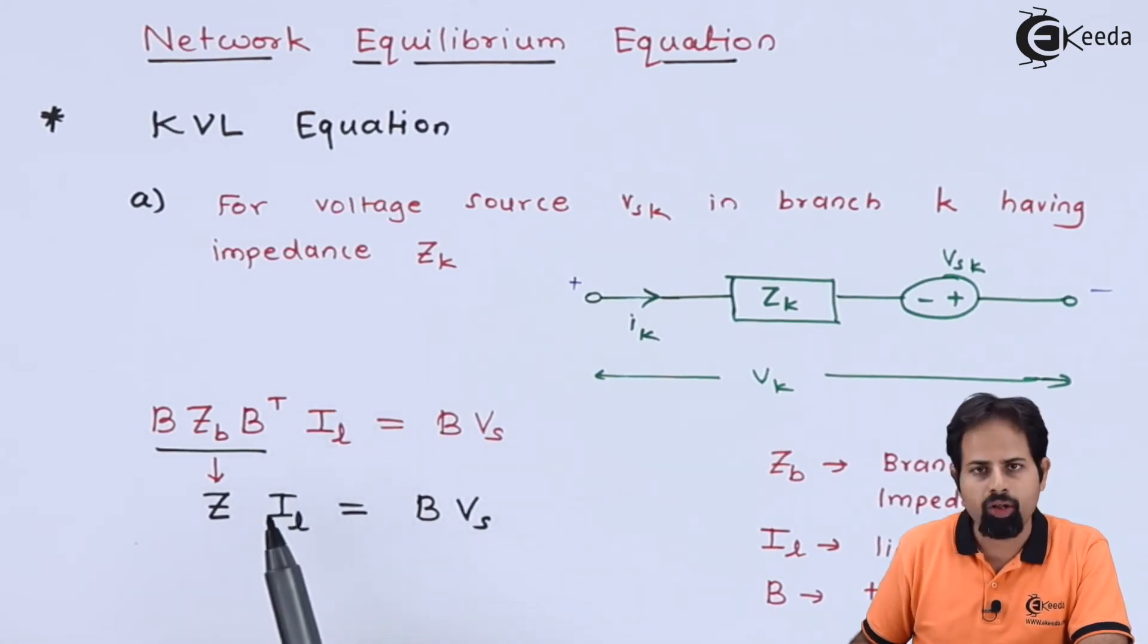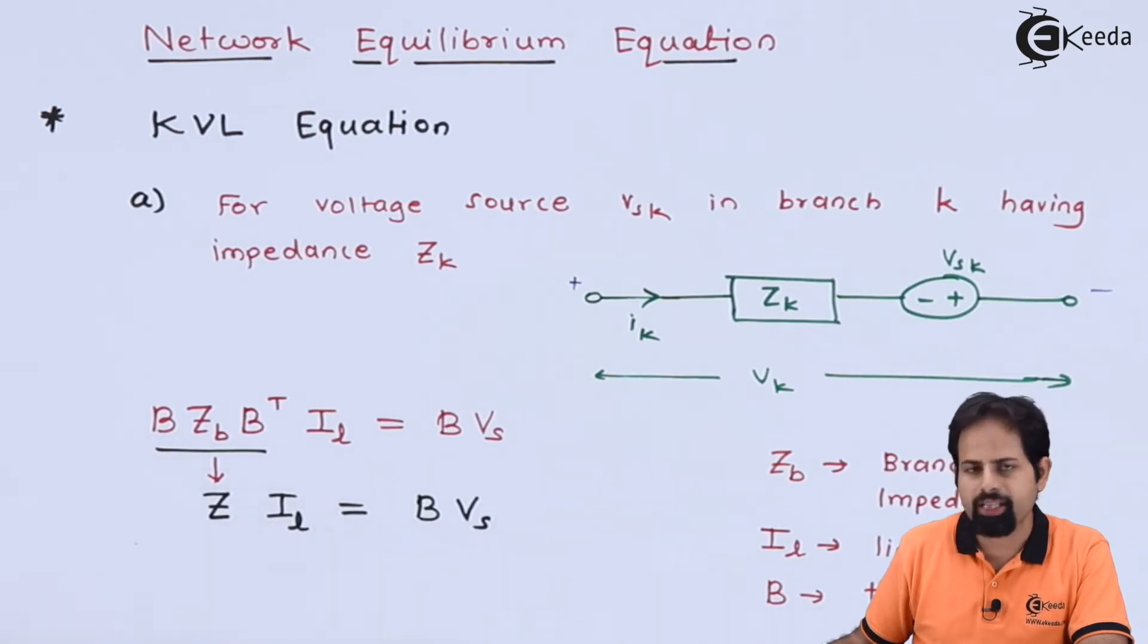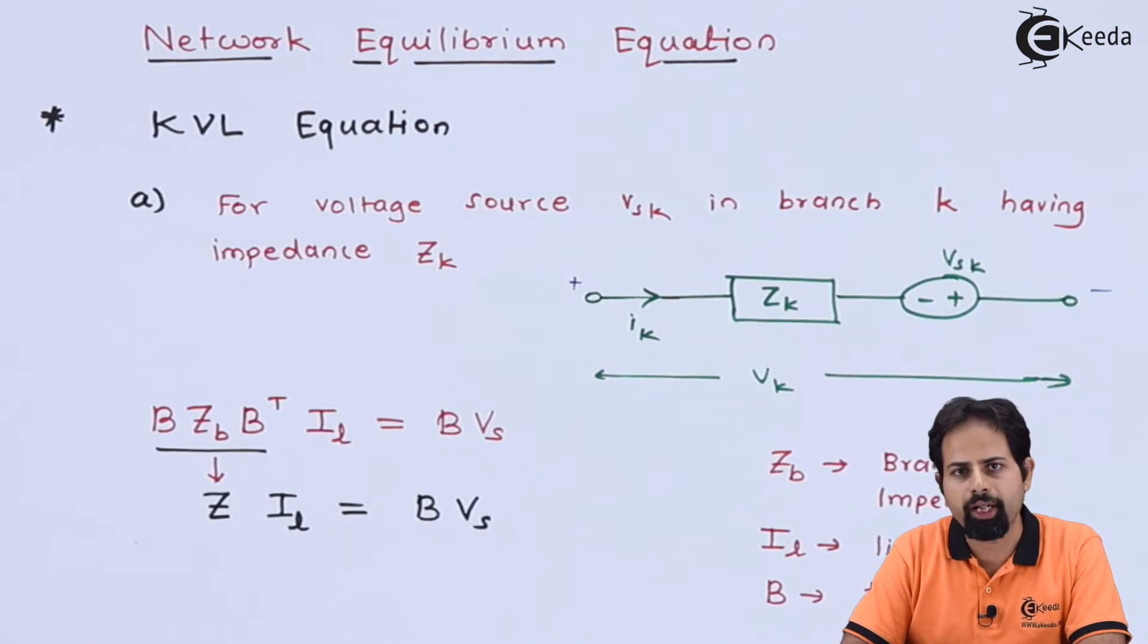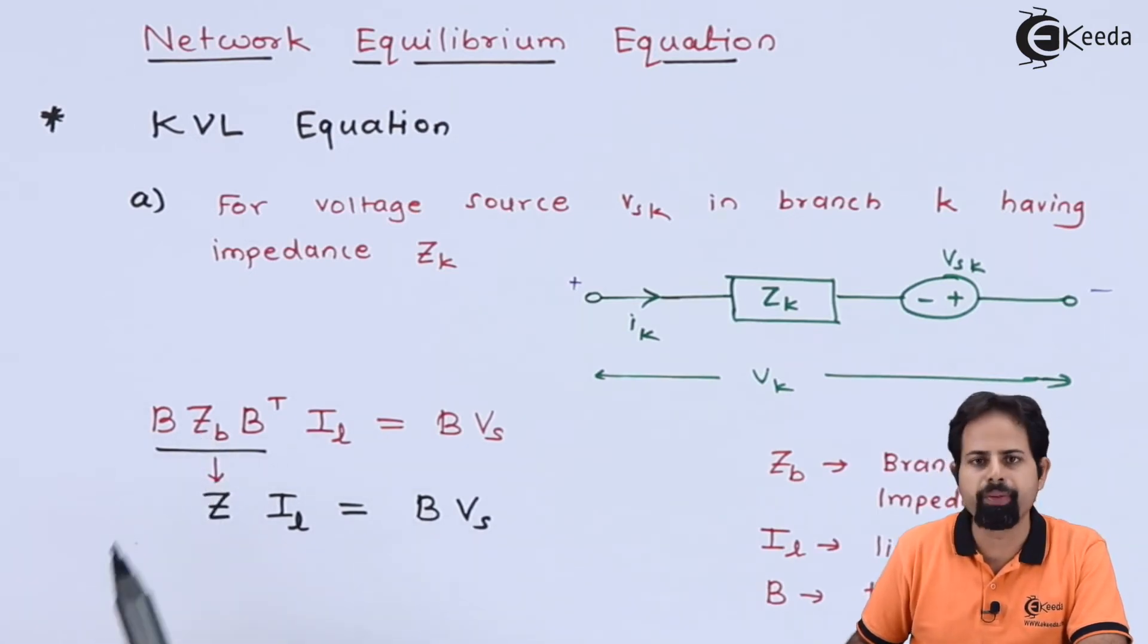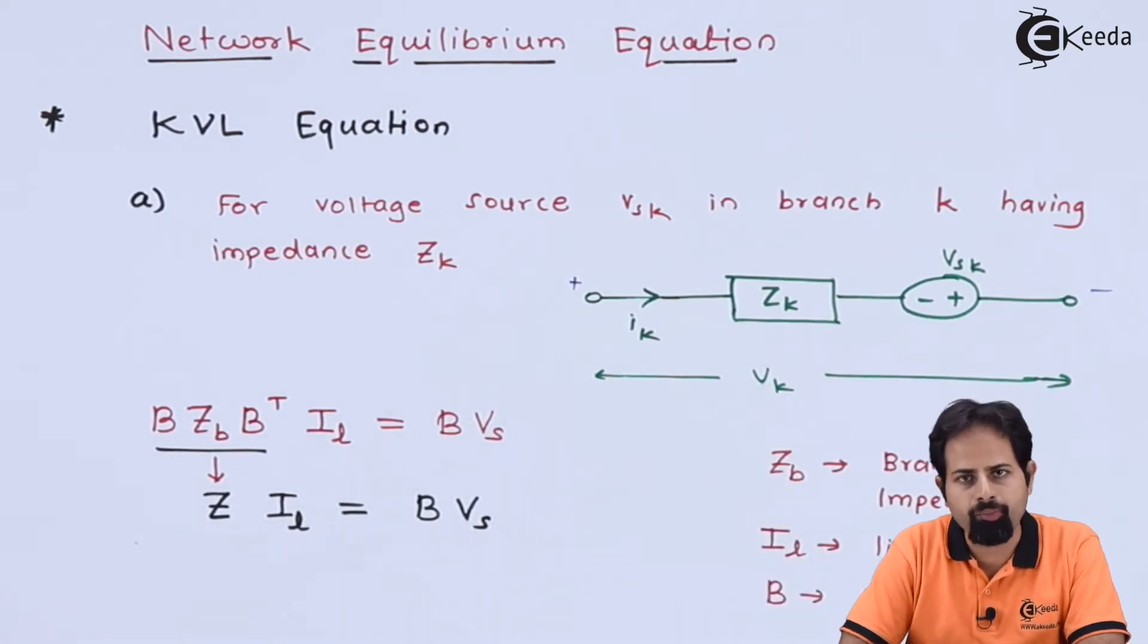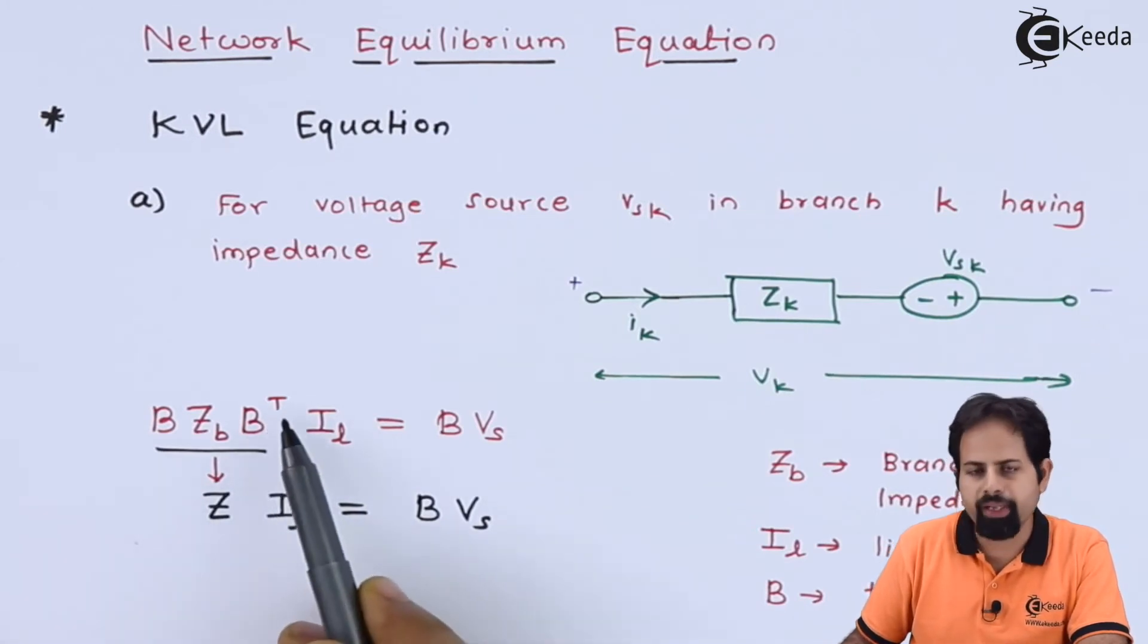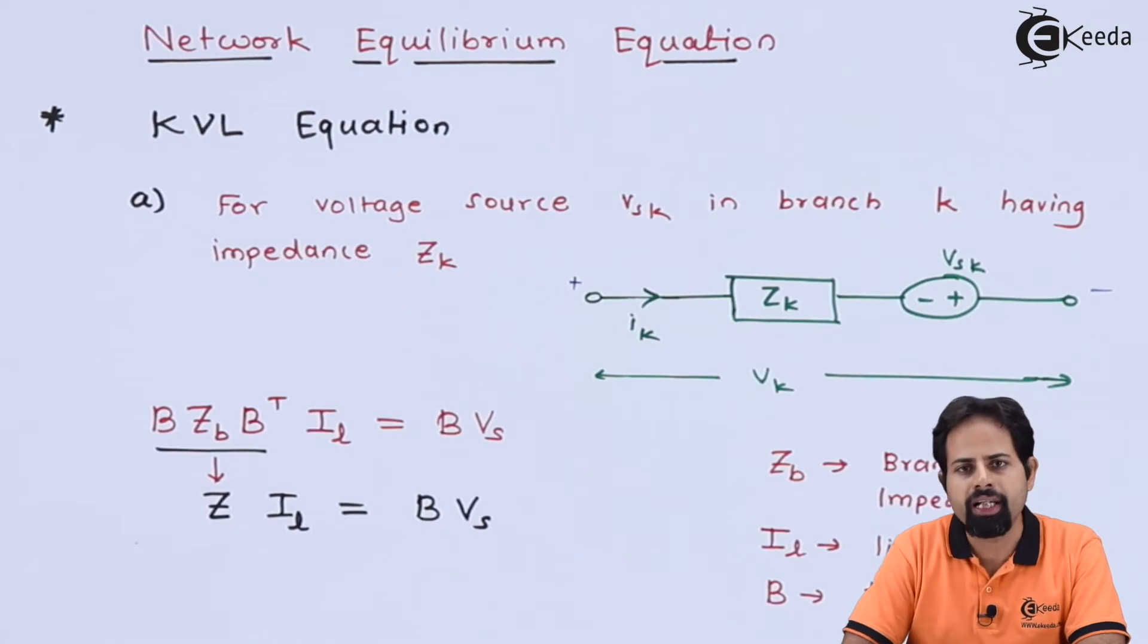This B as you know is nothing but tie set matrix. We have seen this in theory part of tie set matrix. ZB is branch impedance matrix, so whatever is the impedance in branch which will come to know how to get it while solving numericals. BT is B transpose, so transpose of this matrix is here.